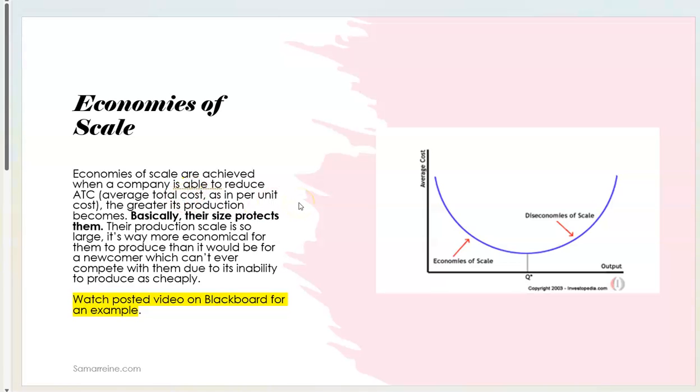Economies of scale are achieved when a company is able to reduce average total cost. In a minute I'm going to show you numerically how that works. The greater its production becomes, you produce more, you're lowering the ATC. It's right here on the first half of the bell curve. Their production scale is so large it's way more economical for them to produce than it would be a newcomer. Basically their size protects them.